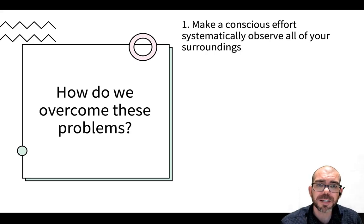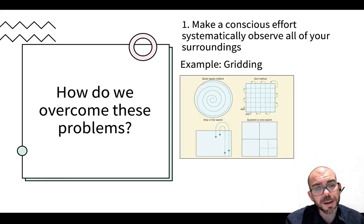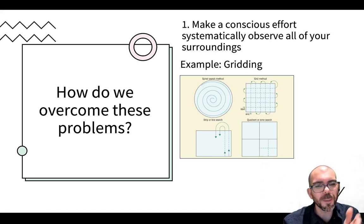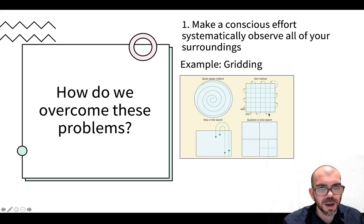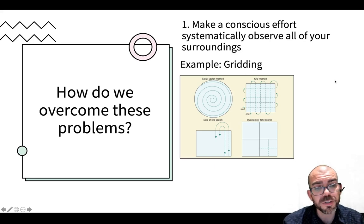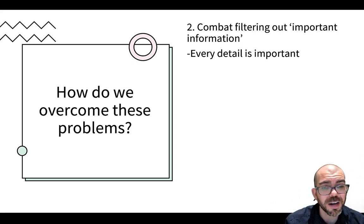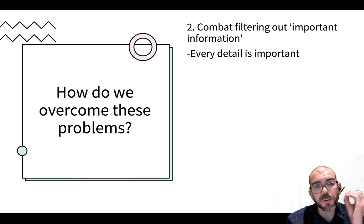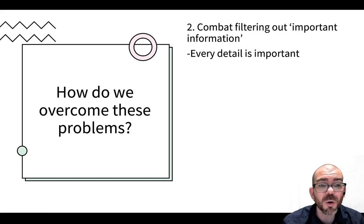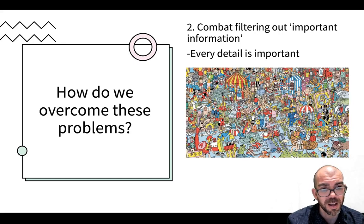All of these reasons are why we have to be careful in making observations. So how do we overcome these problems? There are four recommendations. One is to make a conscious effort to systematically observe all of your surroundings. On crime scenes, there'll often be a methodological method of going through every single part of the scene — for example, gridding. Here you can see the investigator would go strategically through every single portion of a crime scene to make sure nothing is missed. We have to be mindful of our selective attention and force ourselves to pay attention to every single detail. Another thing is to combat the filtering out of important information — we all are constantly filtering, and we have to be conscious and remember every single detail, because at a crime scene we never know what is or is not relevant until it's been analyzed.